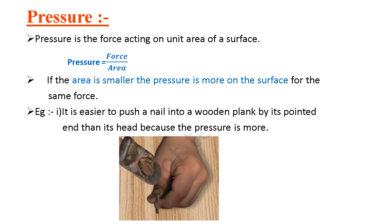Why? Because Raj was using the pointed side of the nail, meaning the area was smaller. The forces applied by both of them were the same, but the area played an important role. It means there is a quantity which relates both force and area, and that quantity is known as pressure. Pressure is defined as the force acting on a unit area of a surface, and mathematically it can be written as: pressure equals force divided by area.